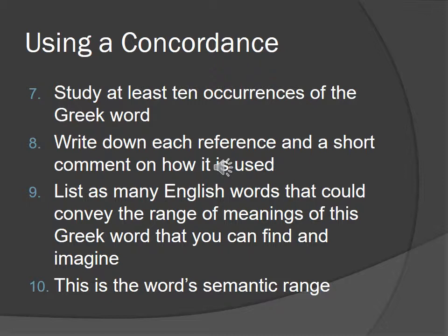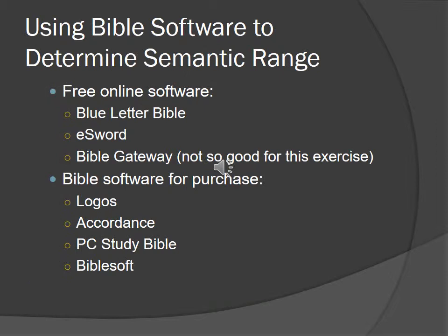Once you've done that, make a list of possible English words that could translate that Greek word — don't just limit yourself to the way it gets used in your translation. Think of synonyms for the ideas you come up with. Come up with as many as you can and write them out on your sheet. This is your word semantic range — a key part of this process. That's how you do it using a concordance.